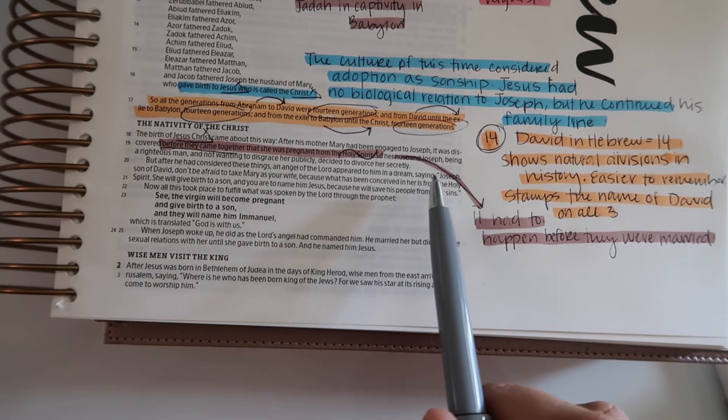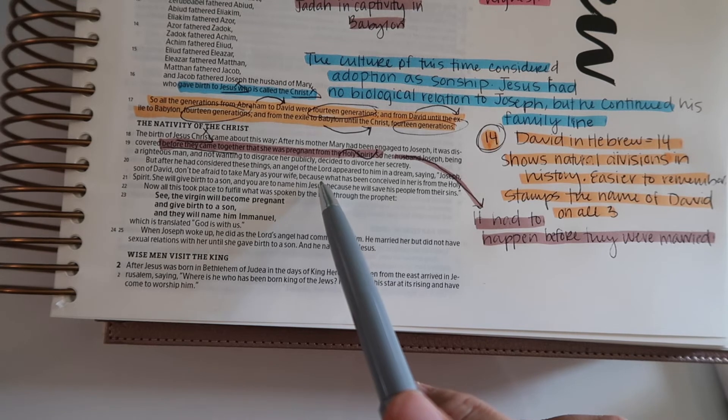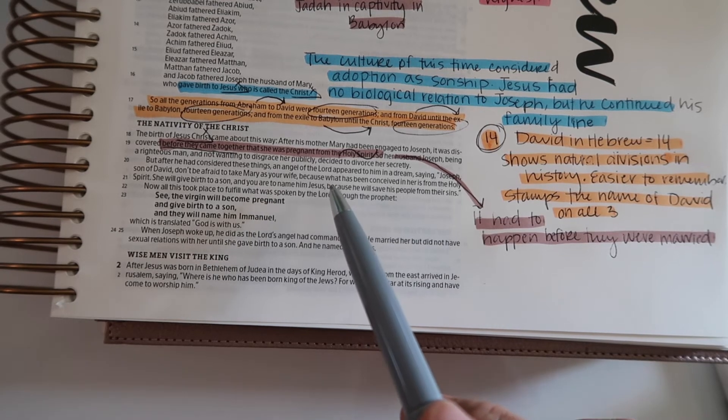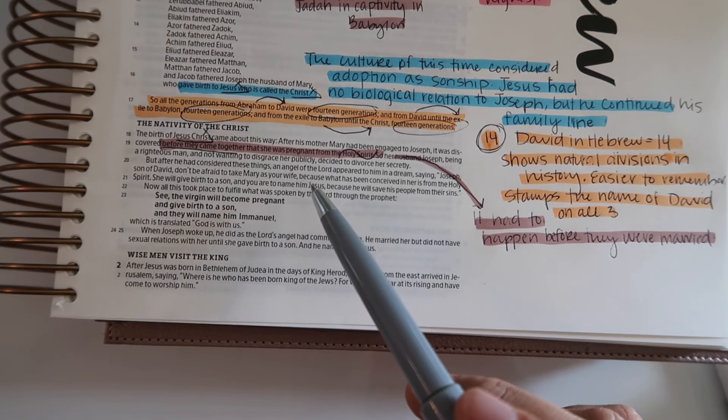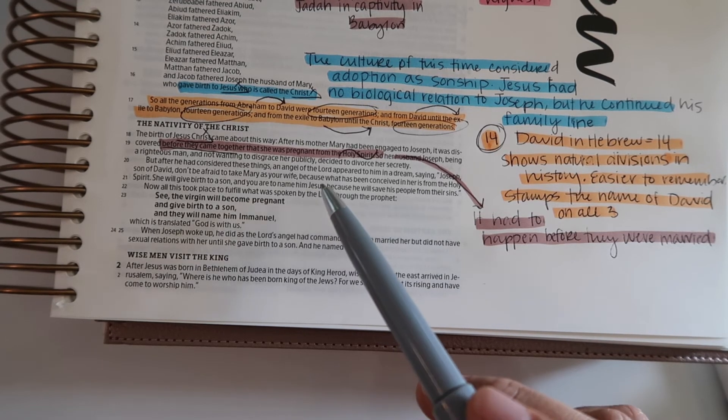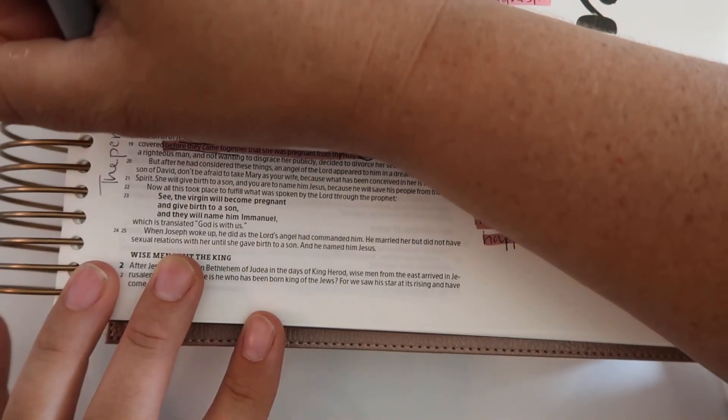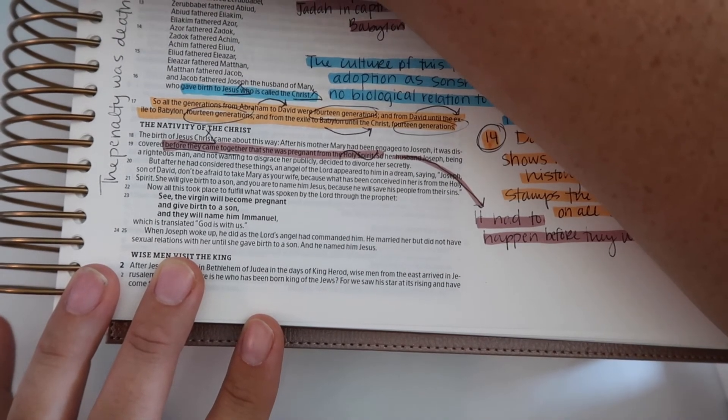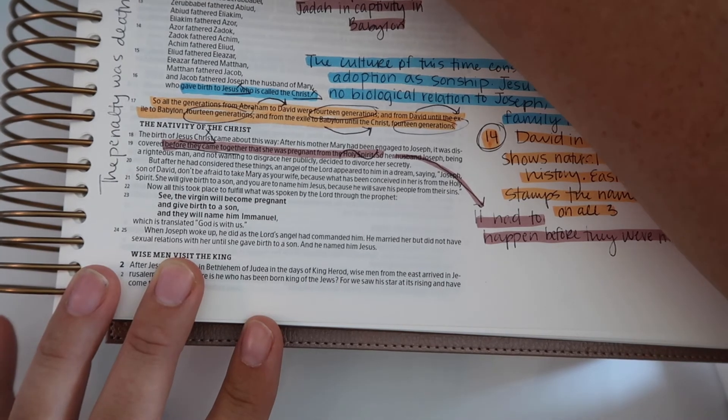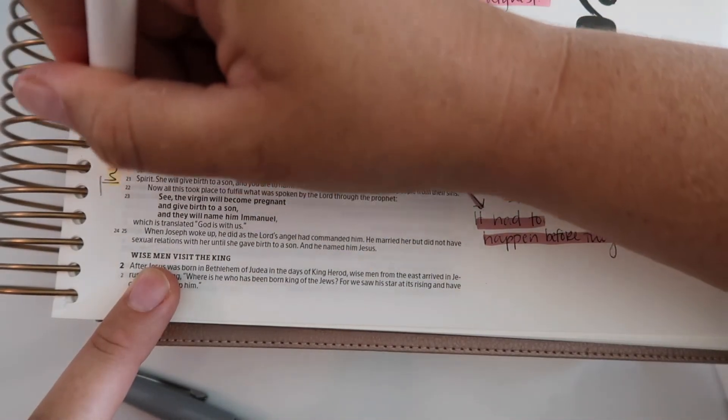Her husband Joseph, being a righteous man and not wanting to disgrace her publicly, decided to divorce her secretly. In this time, if somebody broke the law - like had sexual relations before you were married - you were stoned to death. But my commentary said that at this time they were kind of going away from that and just doing a huge public disgracing of the person. I'm gonna put: the penalty was death or public disgrace.